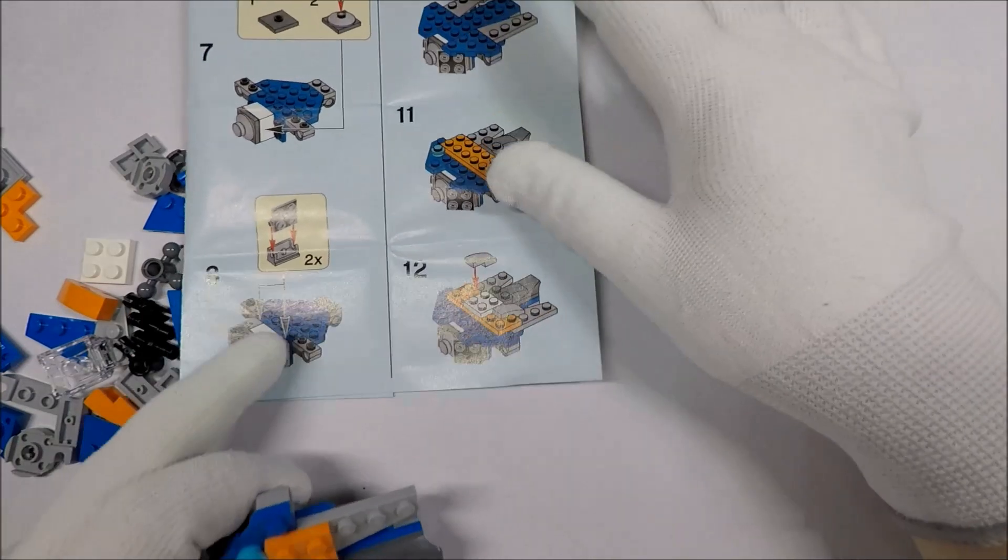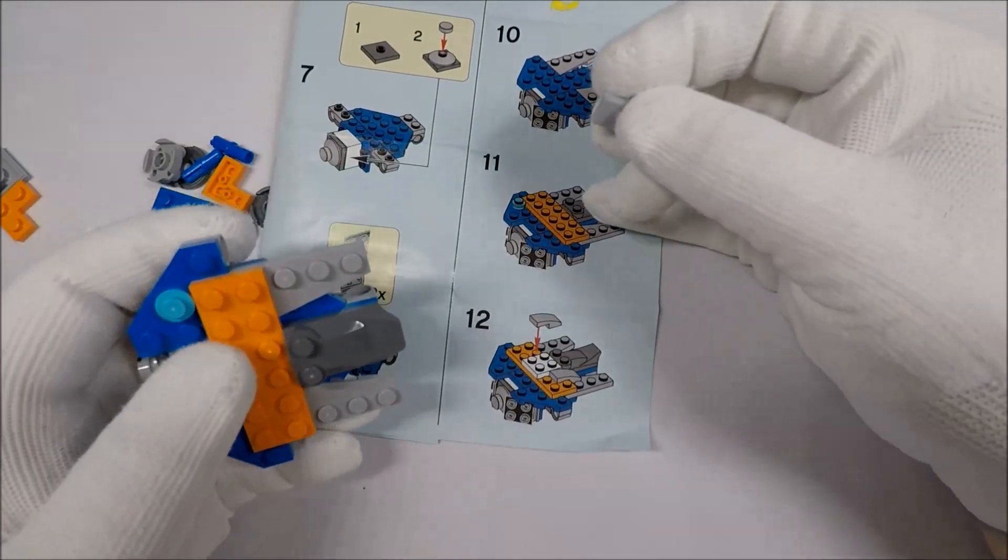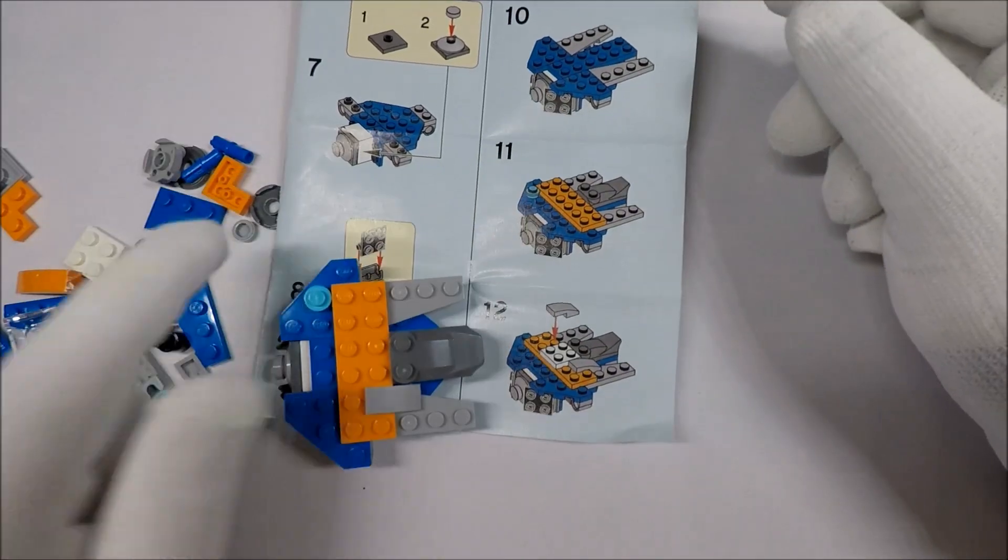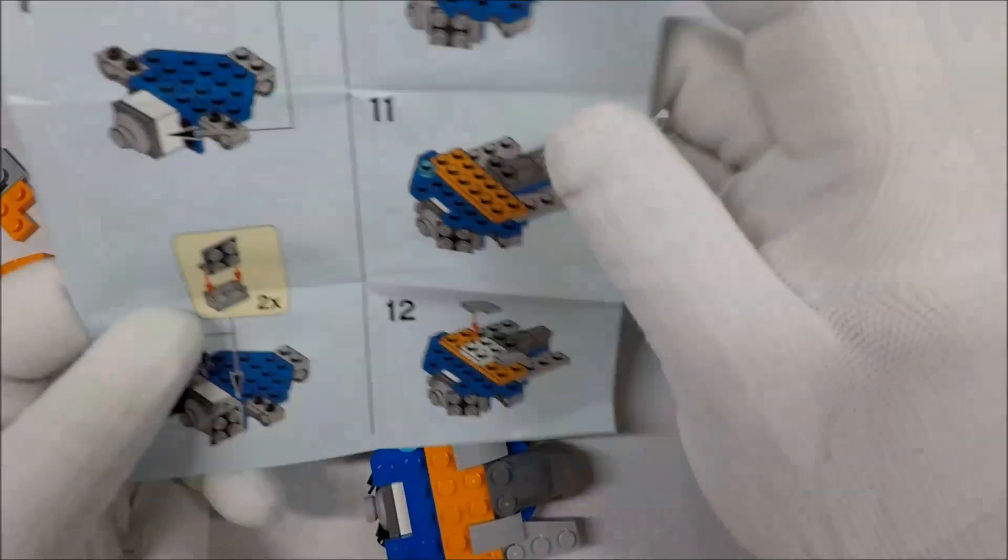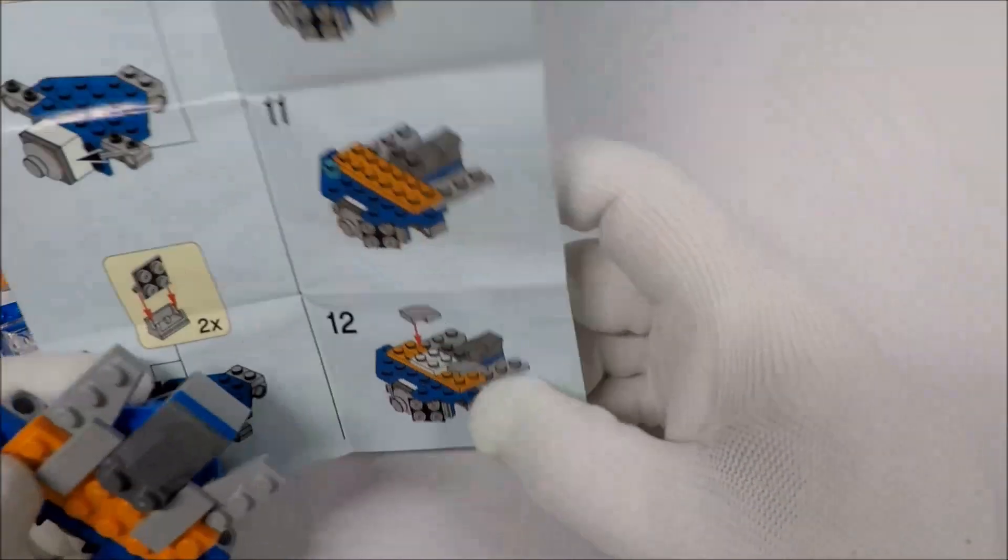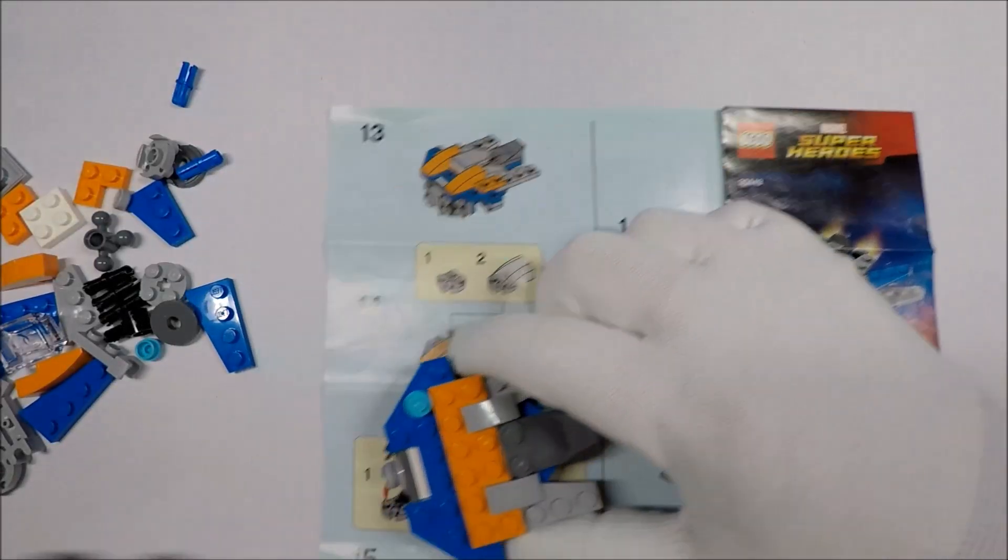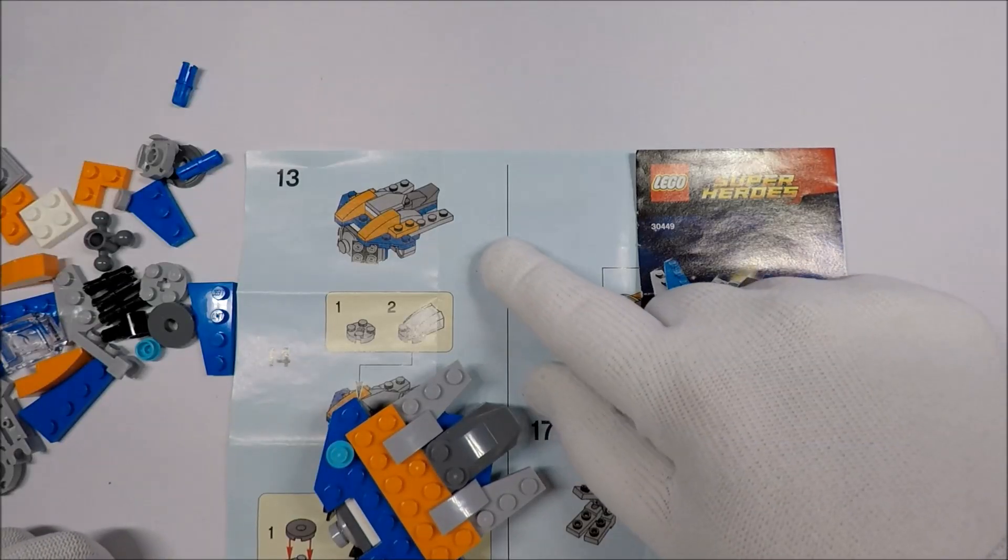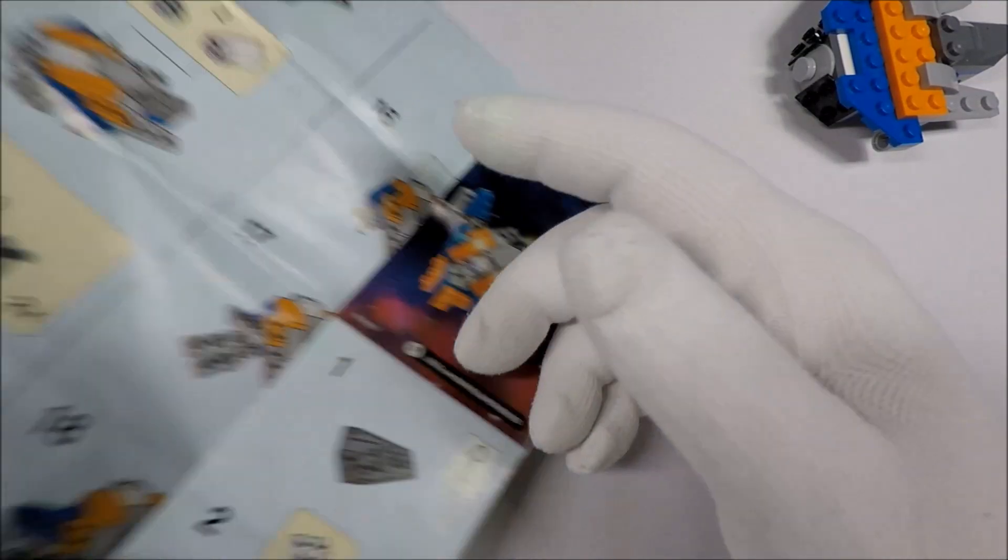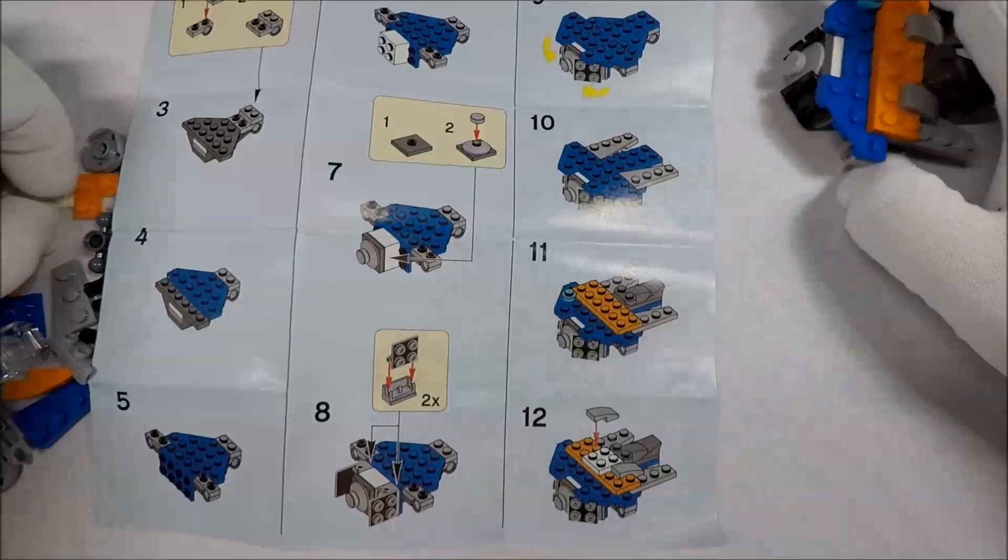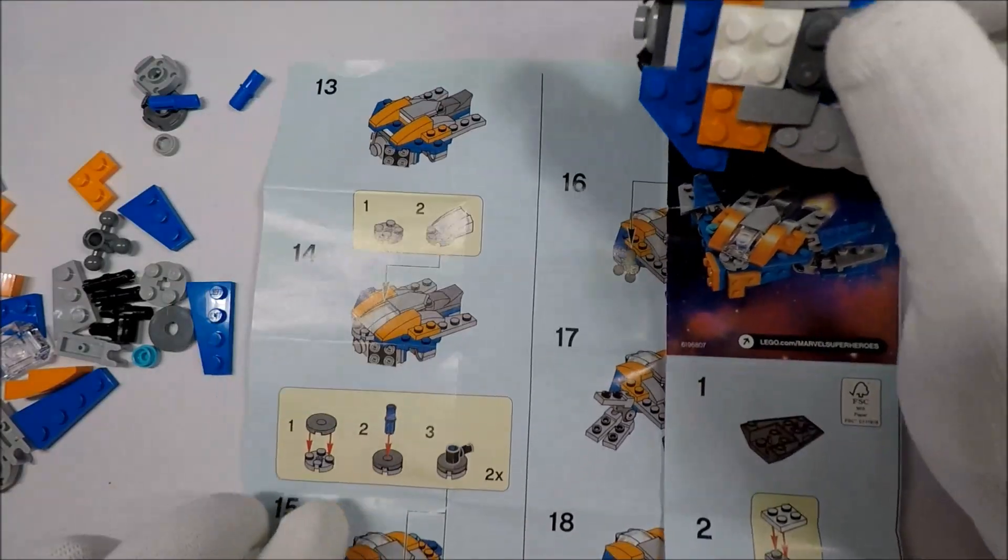And then right here we have this goes here and then this one goes here like so. Yeah, I think it's just right there. Now what's next? Did I miss something? Let's see. I did miss something. I forgot this right here. So we got this right here, right there. And then we move on to the next page.